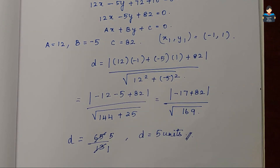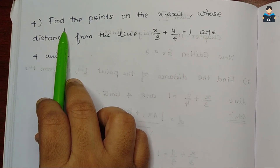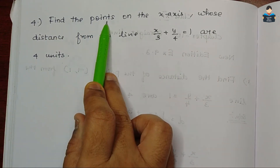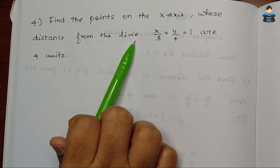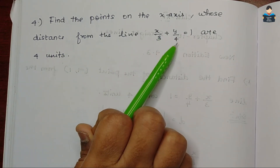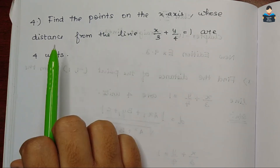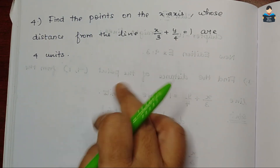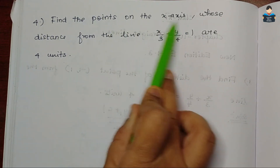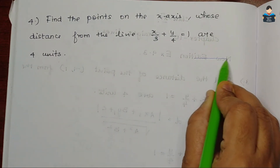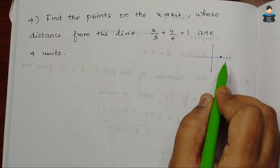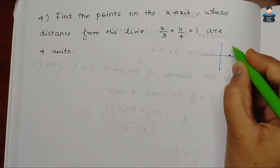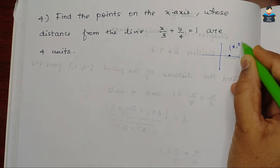இப்போ, next வந்த நம்ம 4th question வந்து பார்க்கலாம். So, 4th question-வில, என்ன கொடுத்திருக்காங்க? Find the points on the x-axis whose distance from the line x by 3 plus y by 4 is equal to 1 are 4 units. So, point on the x-axis — x-axis-ல் ஒரு point. Point on the x-axis-ல இருக்கற point வந்து, எப்படி இருக்கும் நம்மளுக்கு? x, 0.